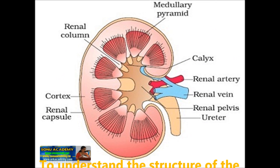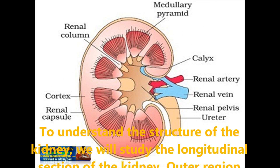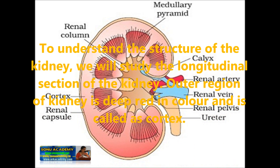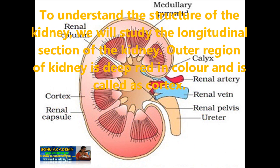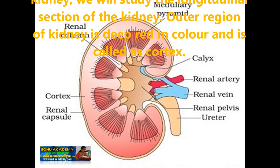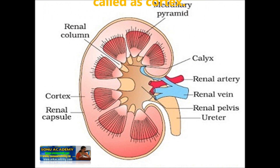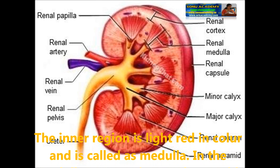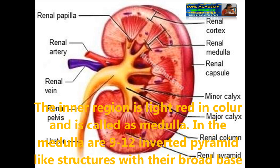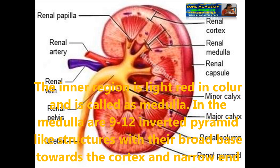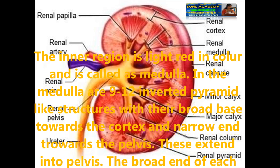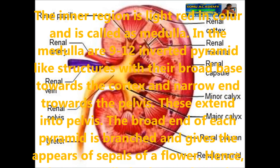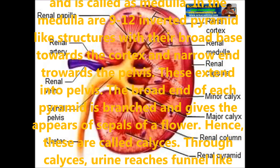To understand the structure of the kidney, we will study the longitudinal section of the kidney. The outer region of the kidney is deep red in color and it is called the cortex. The inner region is light red in color and it is called the medulla. The medulla has 9 to 12 inverted pyramid-like structures with their broad base towards the cortex and narrow end towards the pelvis.